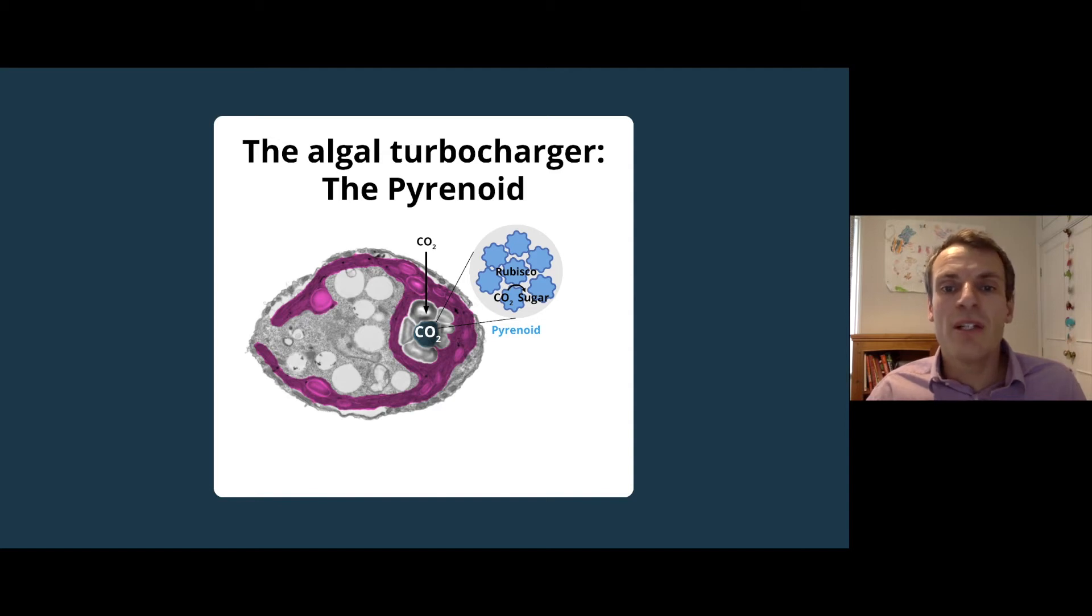Here, I'm showing you an image of an algal cell zoomed over 10,000 times. In magenta is a chloroplast where sunlight is captured. Highlighted in blue is a pyrenoid, and is where all of the enzyme rubisco is found.